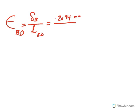And so, okay, we want to find epsilon BD and that would be delta B, as I just showed you, divided by the initial length of BD. So that would be 0.2094 millimeters divided by the initial length, which is 400 millimeters.